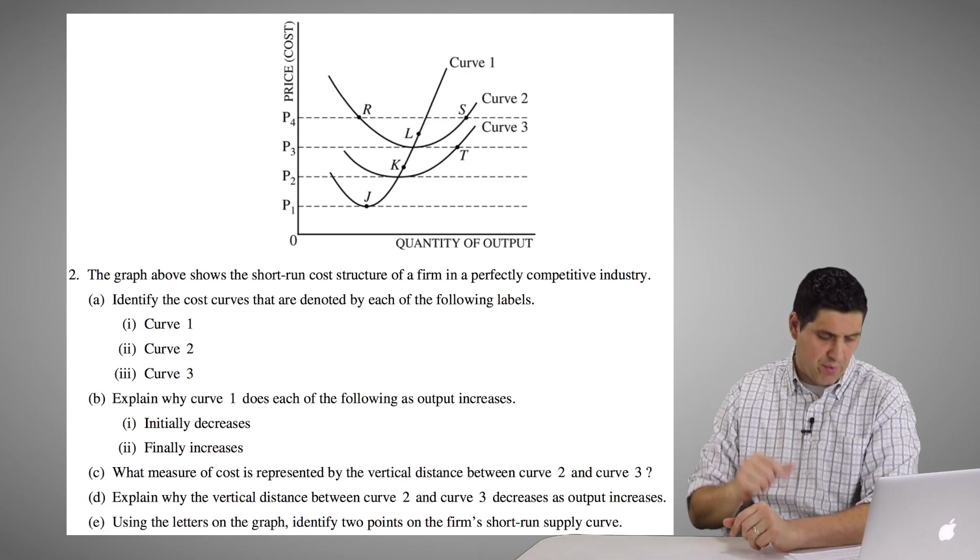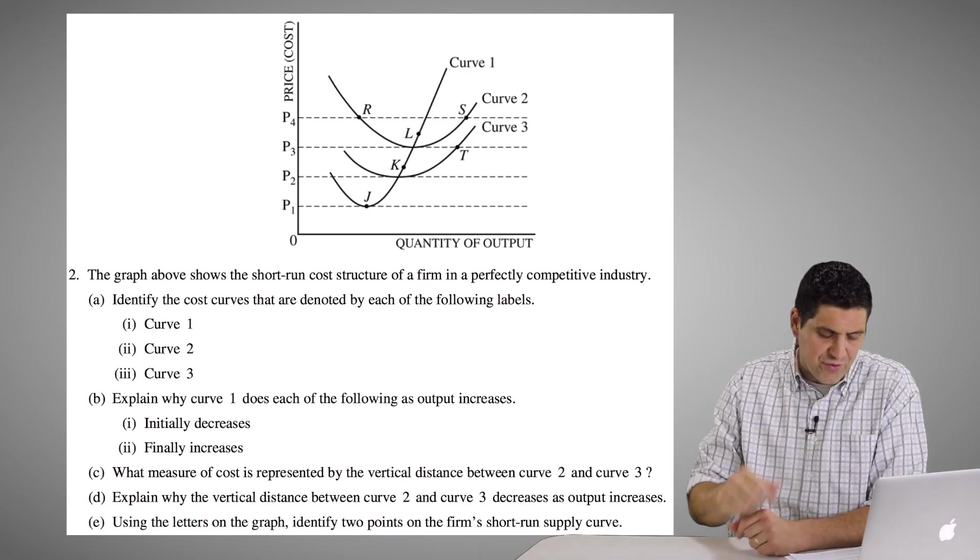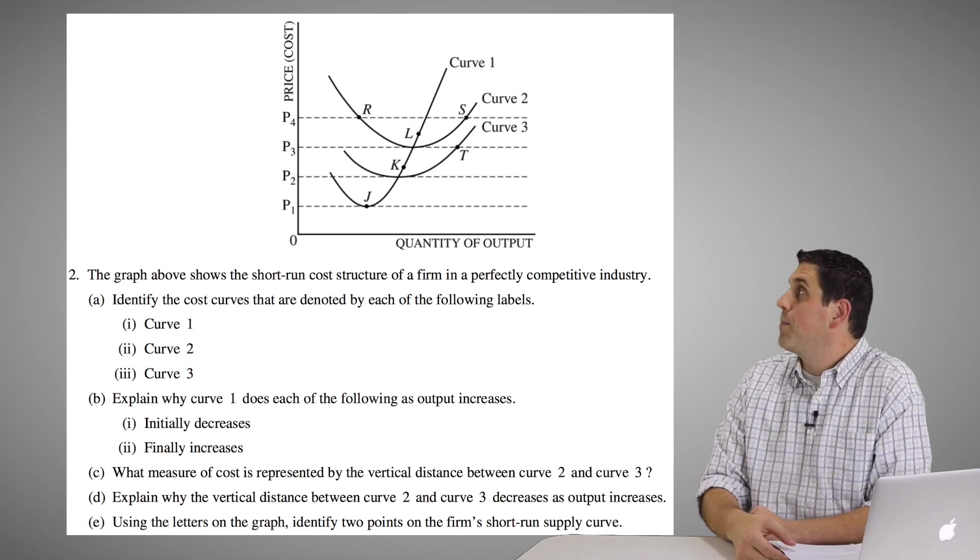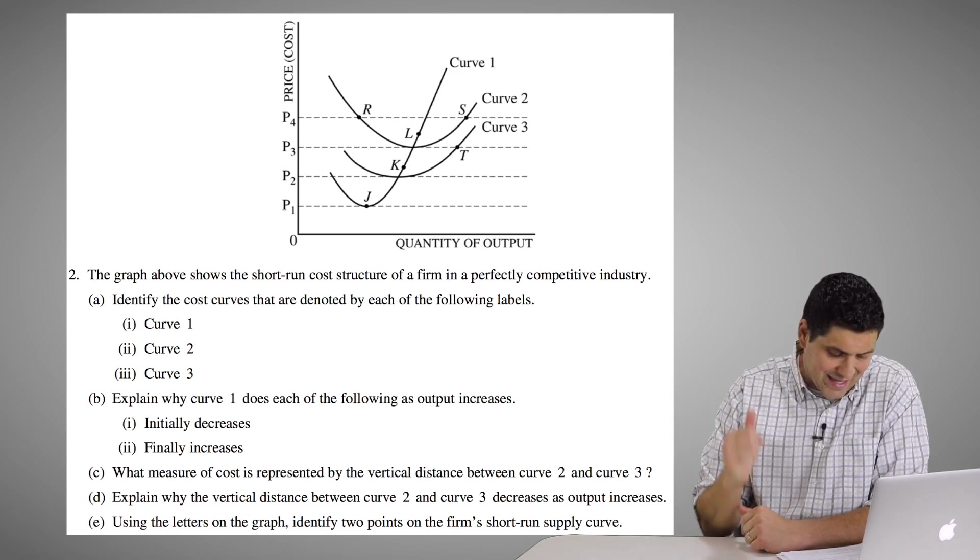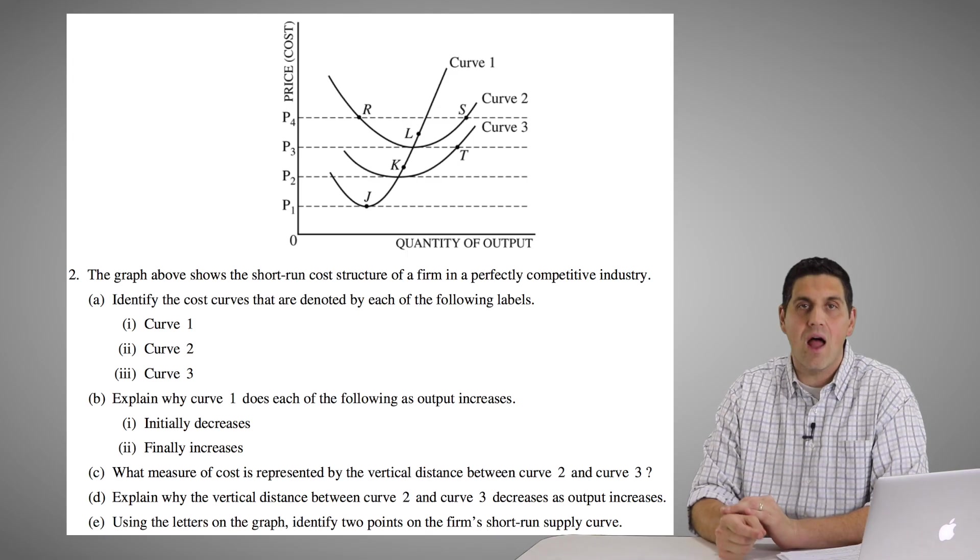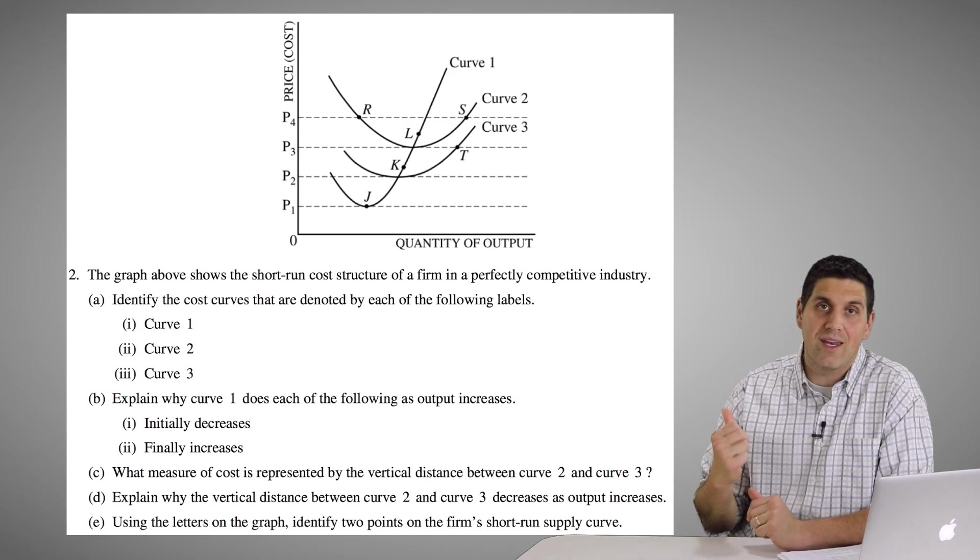So did you do well? All right, let's go over the answers. Here we go. The graph above shows the short-run cost structure for a firm in a perfectly competitive industry, and it says identify the cost curves that are denoted by each of the following: curve one, curve two, and curve three.